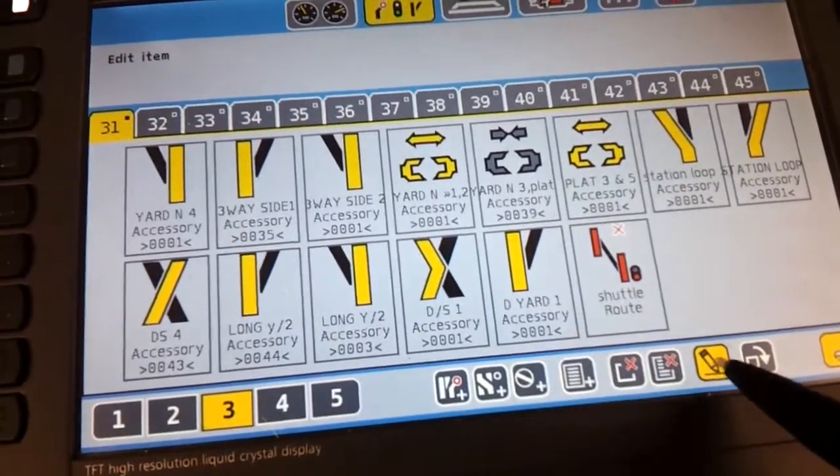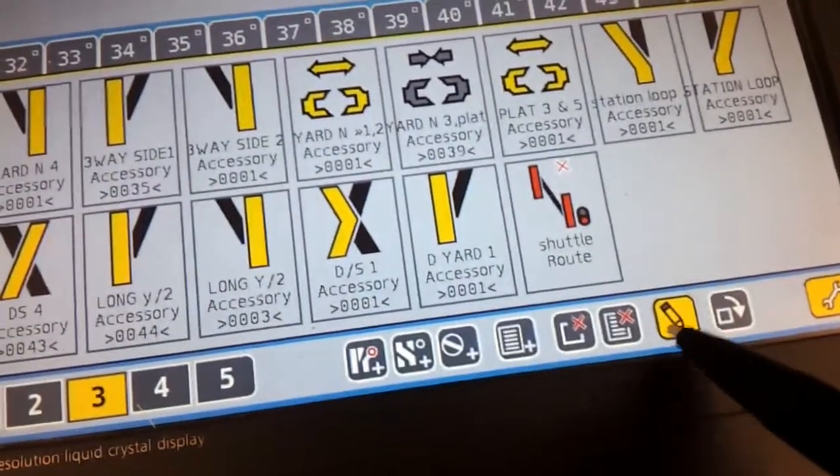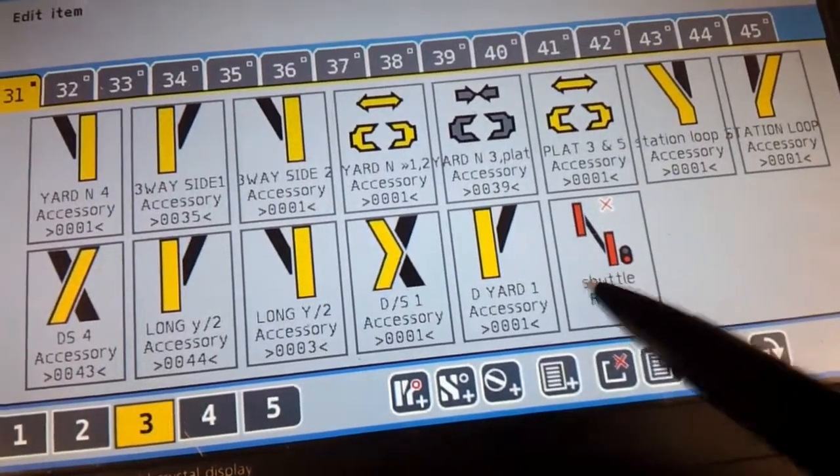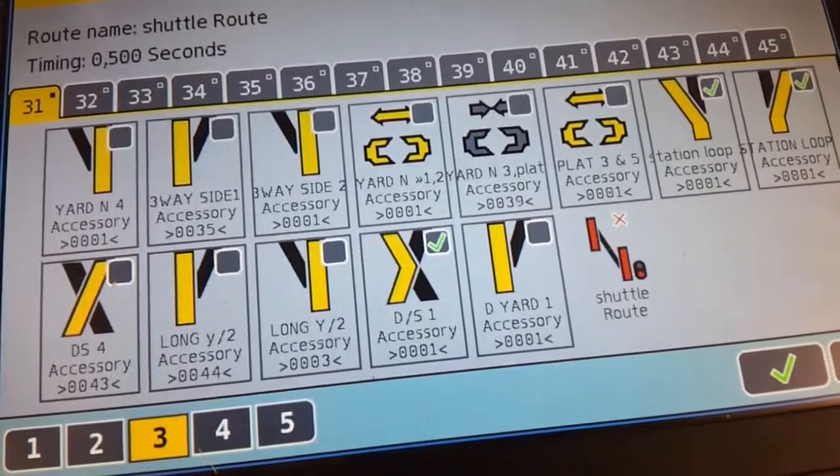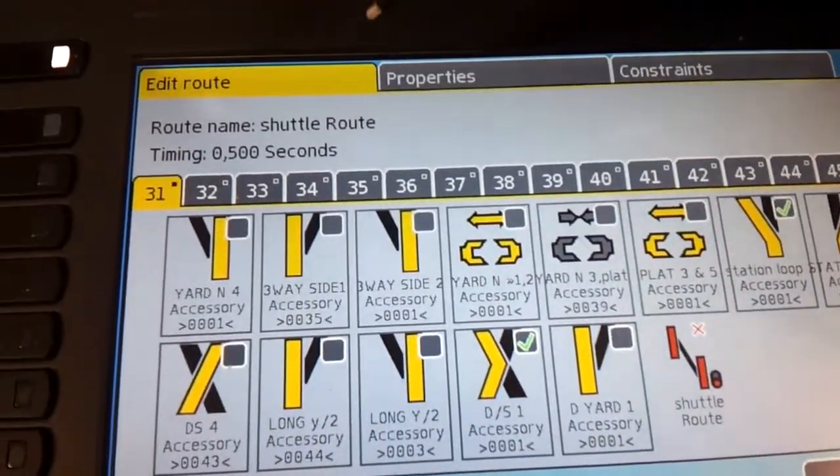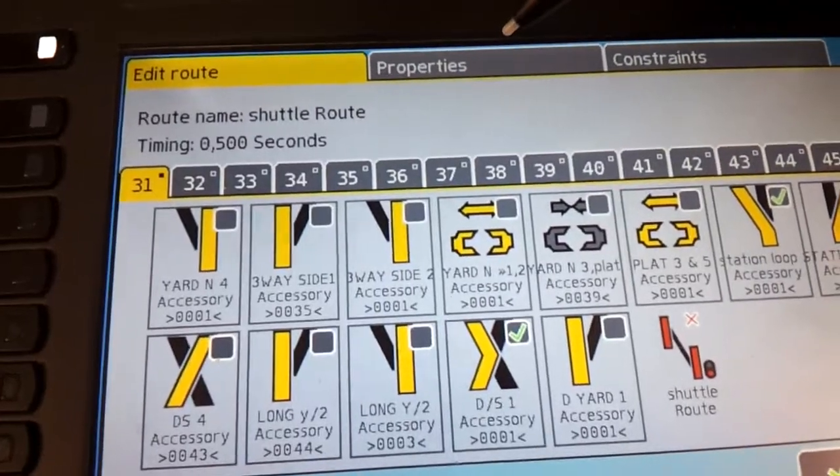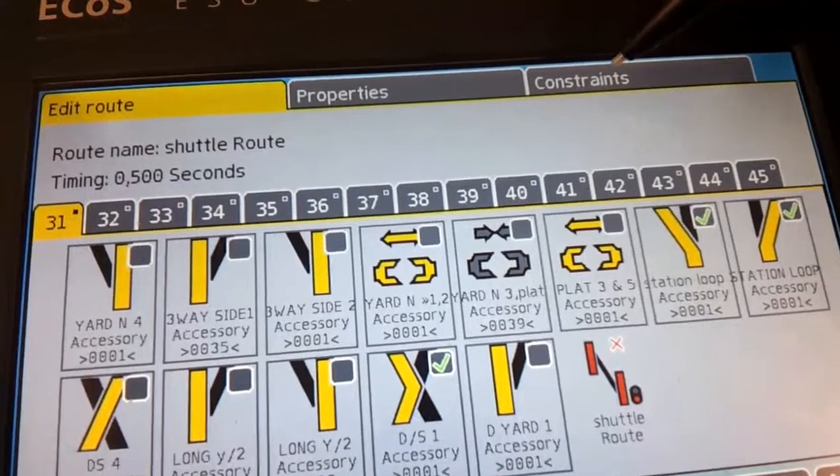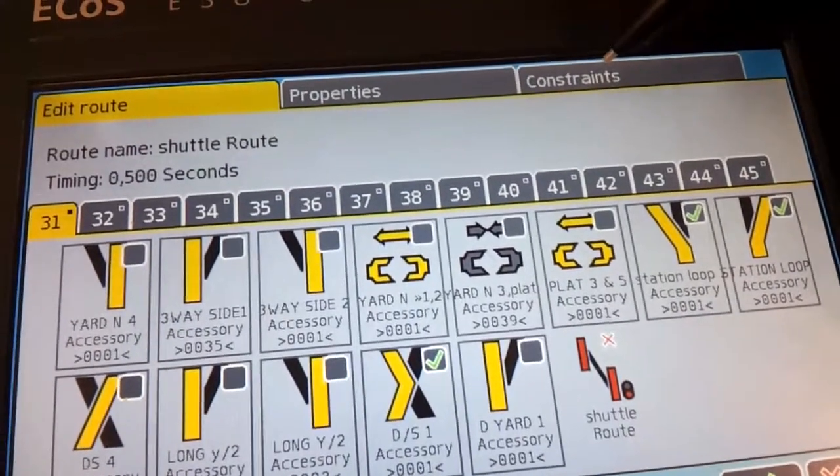Press edit button, which is like that pen on a pad. Press that. Press on your route you want to add. And then you get edit route properties and constraints. This menu isn't in my instruction manual. It doesn't exist. It's on an update.